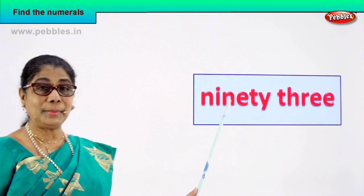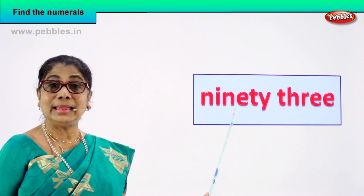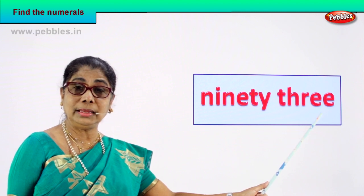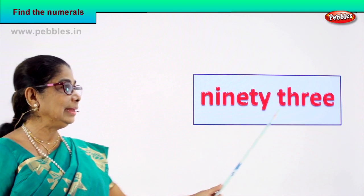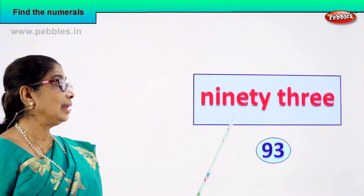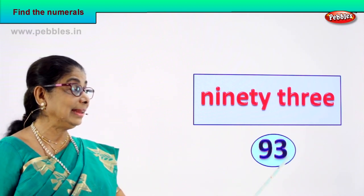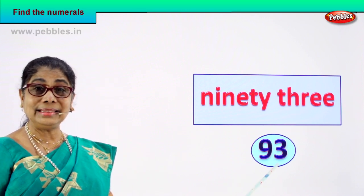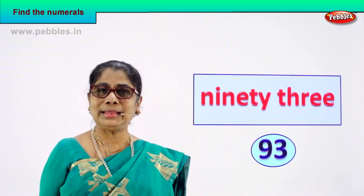Let's take another number name — you guess the numeral. 93. N-I-N-E-T-Y is ninety, T-H-R-E-E is three — 93. Read: 93. How can you write 93 as a numeral? 9 and 3 — 93. Very good! The numeral is 9 and 3, 93.